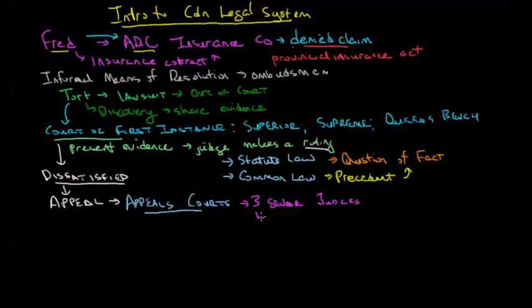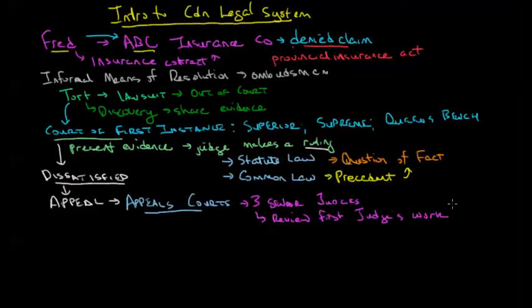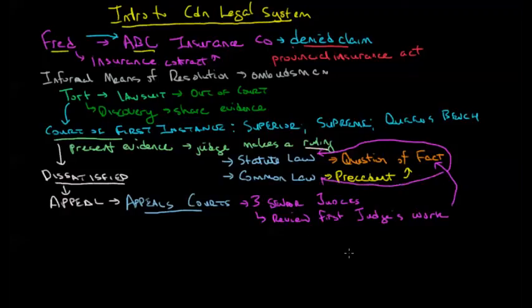These three senior judges will review the work done by the judge at the court of first instance — they review the first judge's work and ask: did that judge properly apply the questions of fact? Were the facts properly matched up with the statute law? And how did that apply back to the common law? These judges review these factors and make a determination about whether the first ruling works or doesn't work.